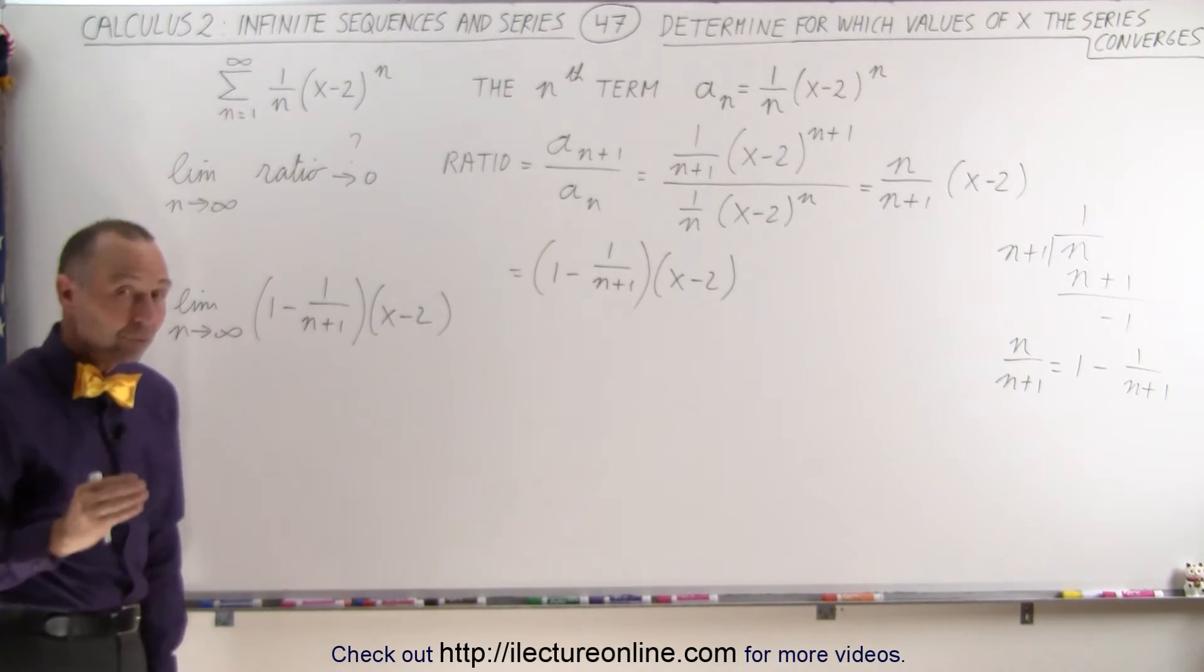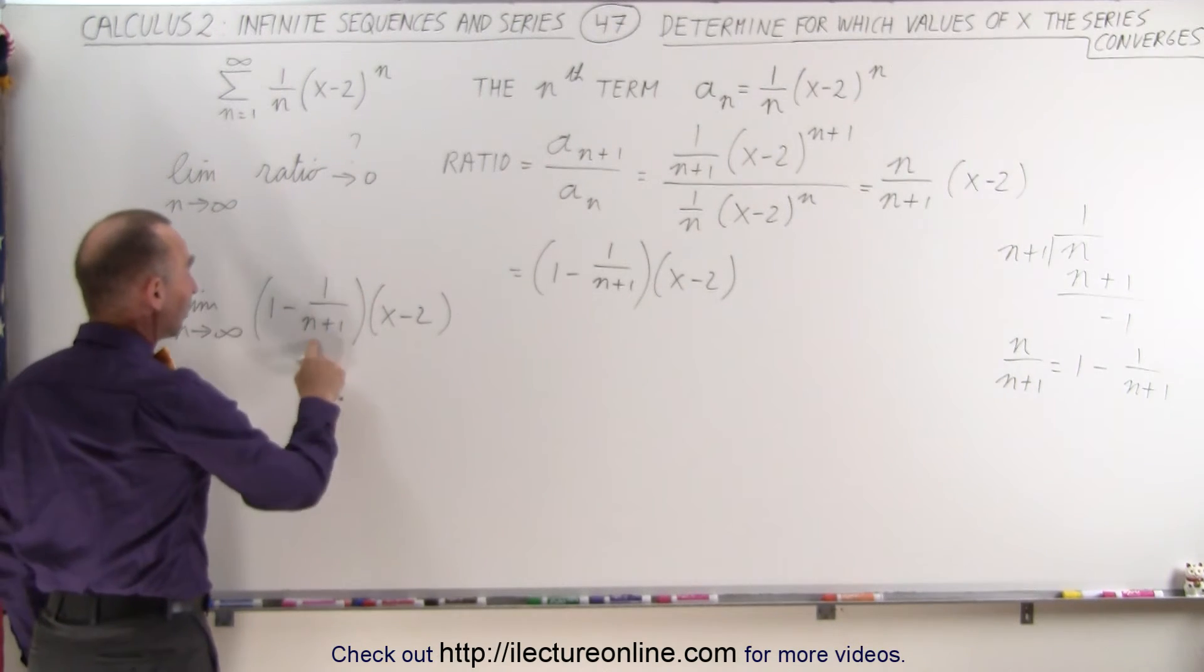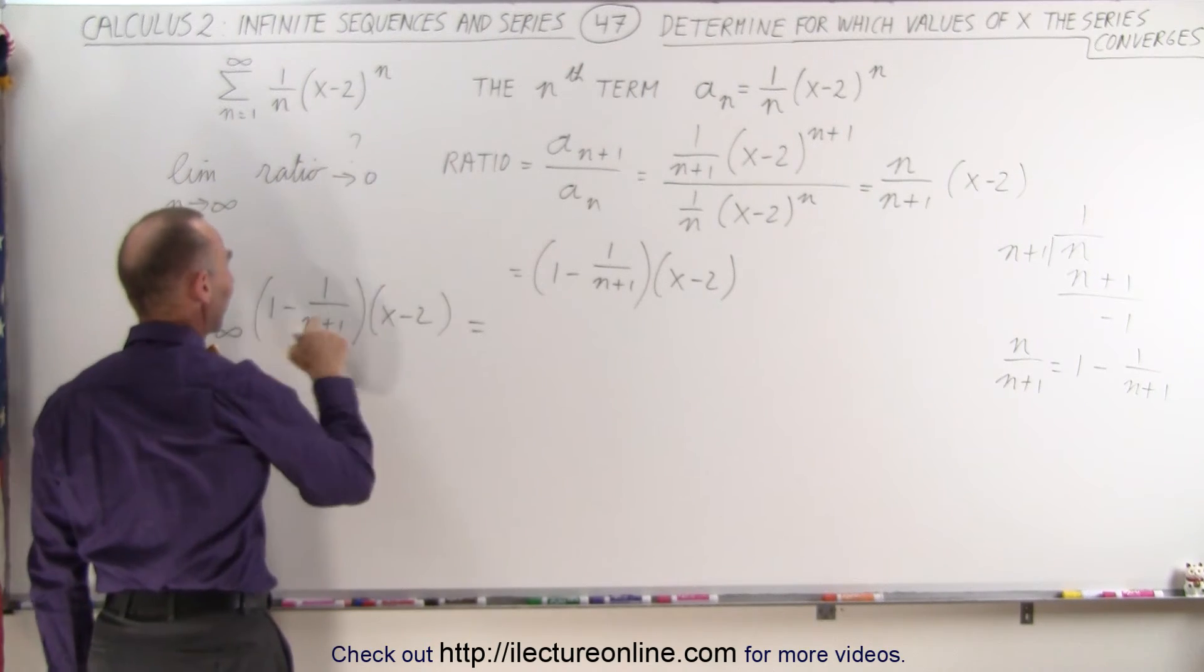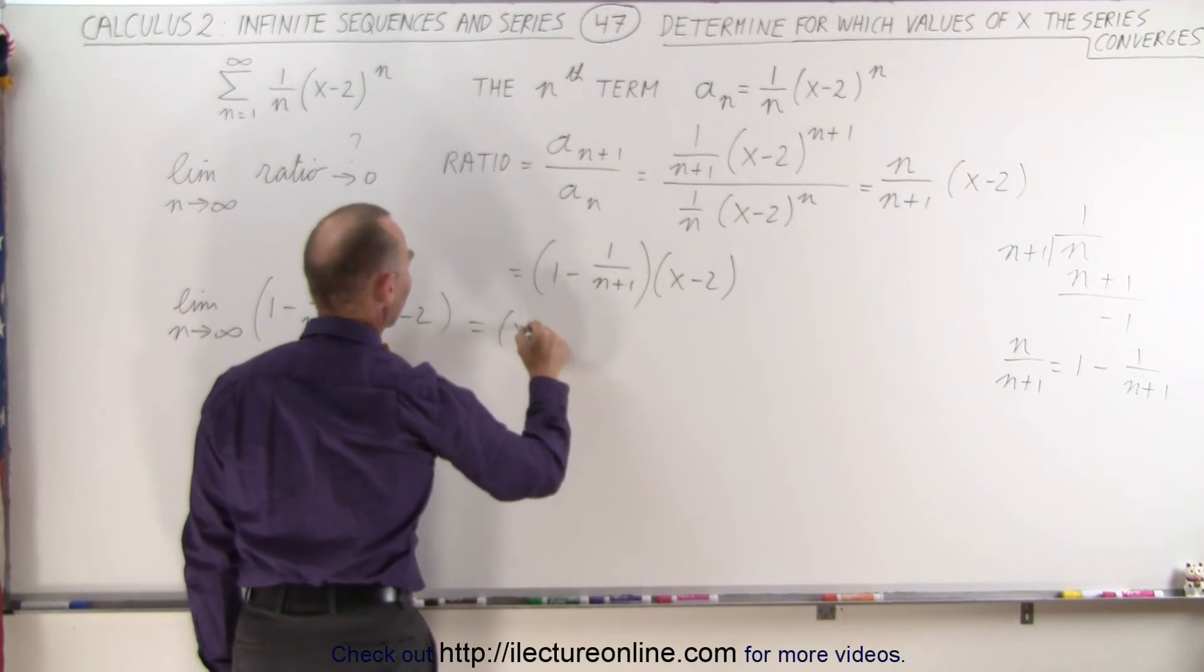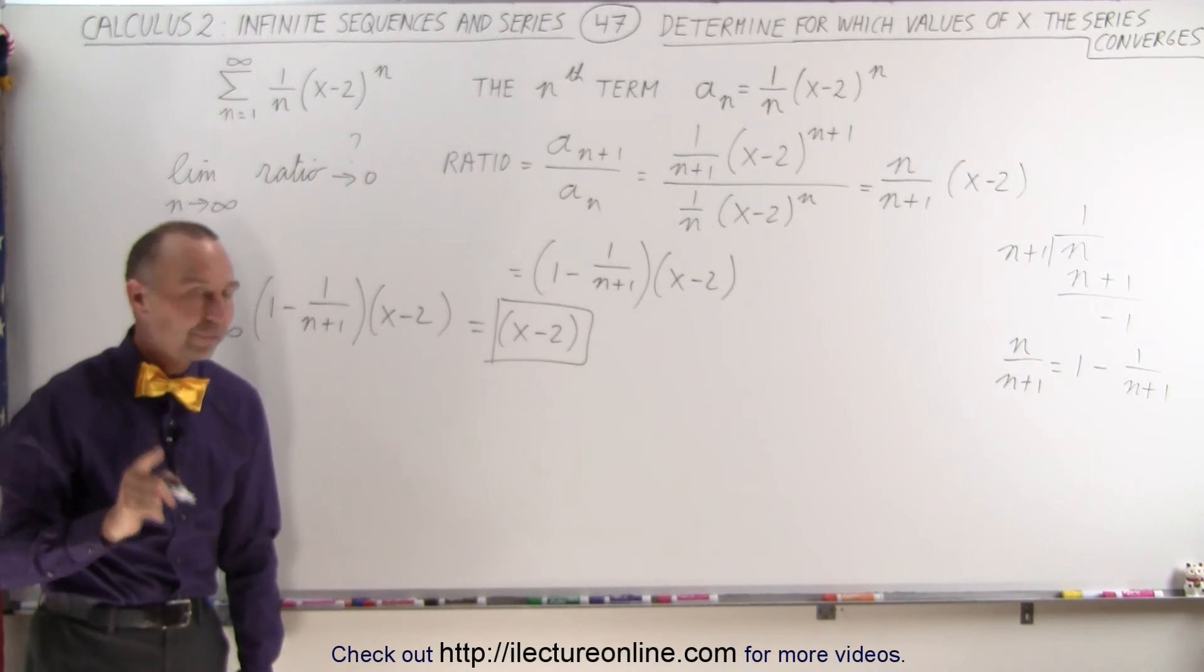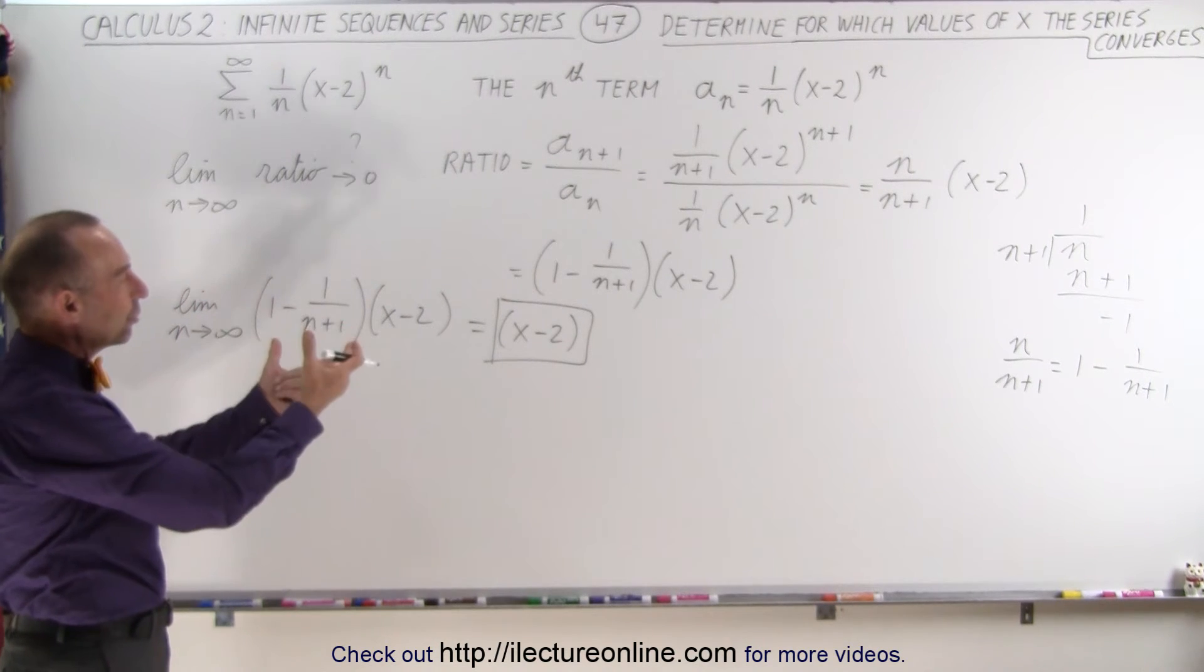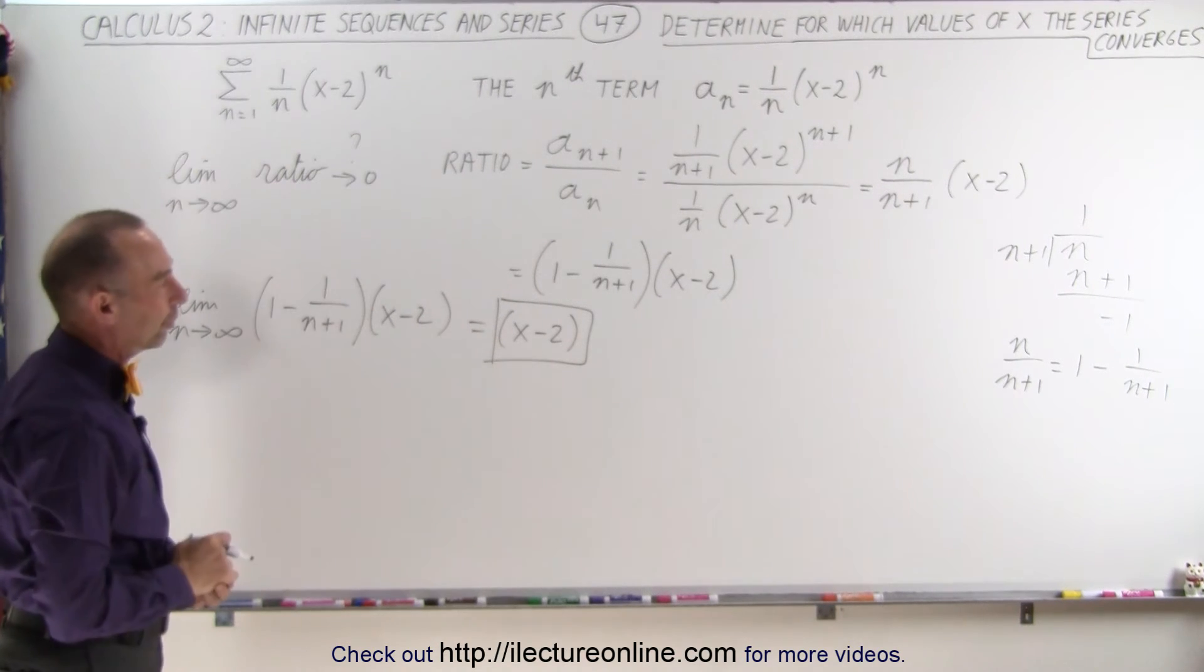The limit as n goes to infinity of 1 minus 1 over n plus 1 times x minus 2. So when n goes to infinity, 1 over n plus 1 will go to 0, and so then we end up with 1 times this, or x minus 2. So in the limit, we see that the terms will converge down to x minus 2. So for which values will the whole series converge?